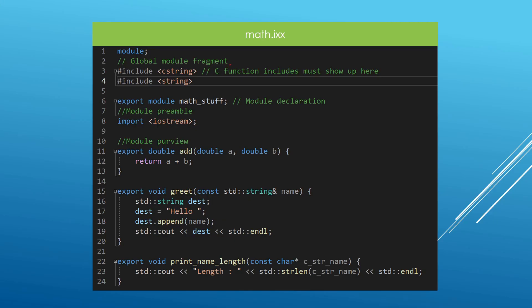We will declare a module file. The name of the file is going to be math.ixx because this is the extension we are using here. Notice that in the global module fragment, we are using old style includes. Some things can't still be imported, especially on different compilers. I think you can import almost everything inside Visual C++ at this point, but it is not always going to work with GCC and Clang. What I have here is the sweet spot I was able to find to work across all compilers, but feel free to try and import and see how far you can go in your favorite compiler. If you come across errors, please revert back to what we have here because I made sure it can work on all compilers of interest in this chapter.